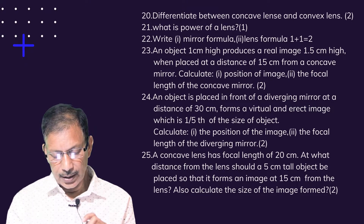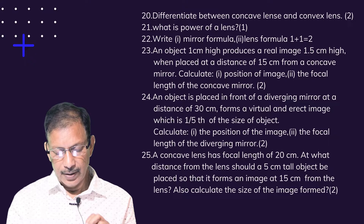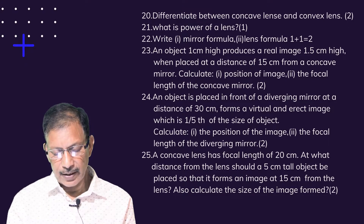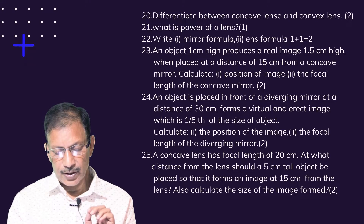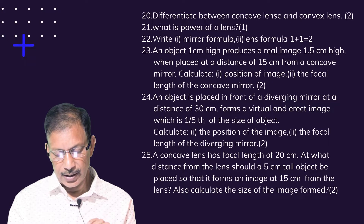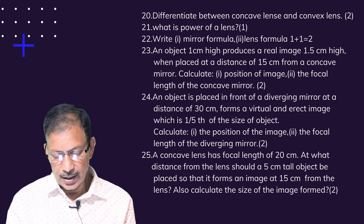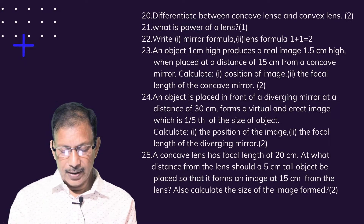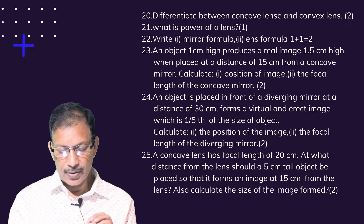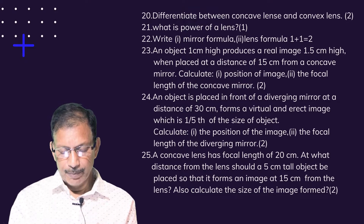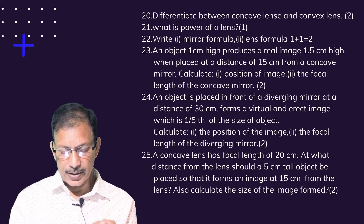Calculate the focal length of the concave mirror. Next question: an object is placed in front of a diverging mirror at a distance of 30 centimeters — it forms a virtual and erect image which is one-fifth of the size of the object. Calculate the position of the image and the focal length of the diverging mirror. Then, a concave lens has a focal length of 20 centimeters — at what distance from the lens should a 5-centimeter tall object be placed so that it forms an image at 15 centimeters from the lens? Also calculate the size of the image formed.